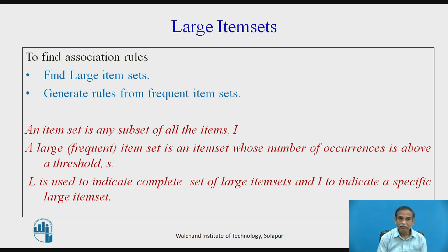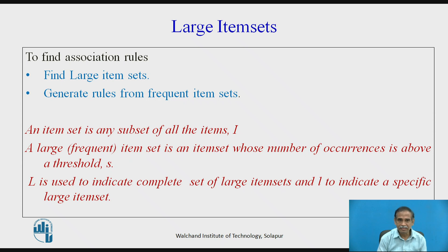For large item sets, we prefer to have large item sets so that the rules generated are more precise and not directly implicit to a particular user. If the database is very small, we can make implications directly, so the database should be larger to support the accuracy of the rules. To find association rules we find large item sets and generate rules from frequent item sets. A large frequent item set is the set of all frequently purchased items whose number of occurrences is above a threshold. L is used to indicate a complete set of large item sets, and l to indicate a specific large item set.